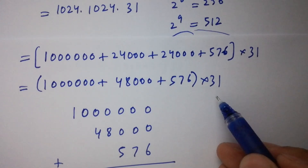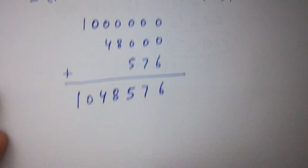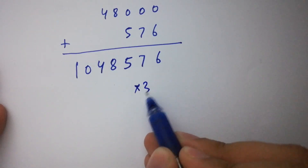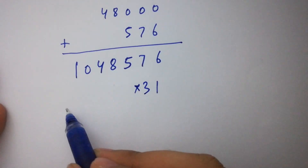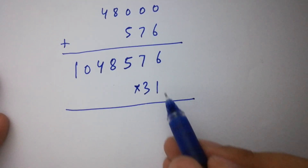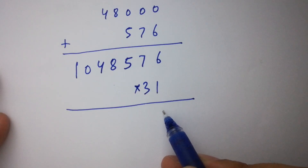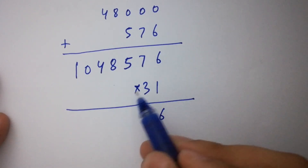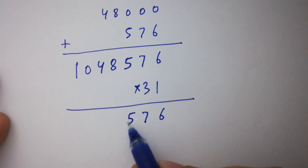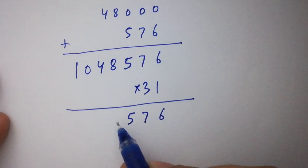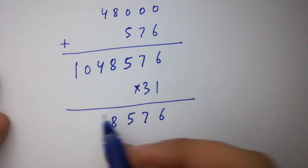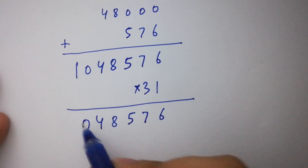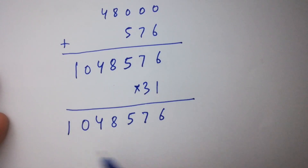Multiplying 1,048,576 by 1 (the ones digit of 31): 1 times 6 is 6, 1 times 7 is 7, 1 times 5 is 5, 1 times 8 is 8, 1 times 4 is 4, 1 times 0 is 0, 1 times 1 is 1. So the first partial product is 1,048,576.